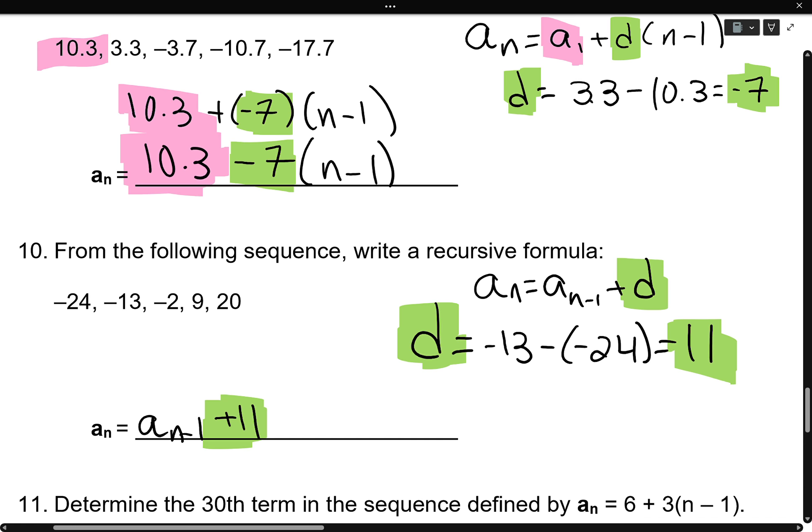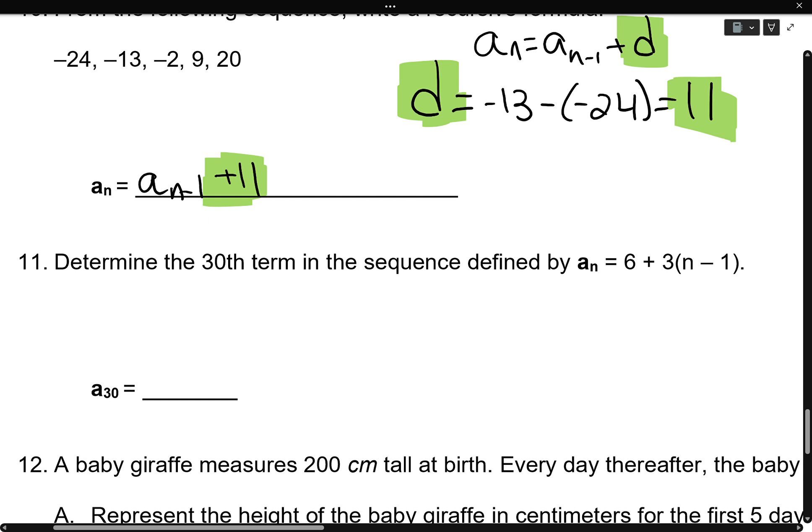On number eleven, we're going to determine the thirtieth term of the sequence. In order to do that, in our calculator, we take this equation. Well, we're going to put this part into our calculator. But, into the equation that we were given, we're going to plug thirty into n. That goes right into my calculator. And I get an answer of ninety-three. Remember, we're not putting letters in our calculator. It does not know that stuff.